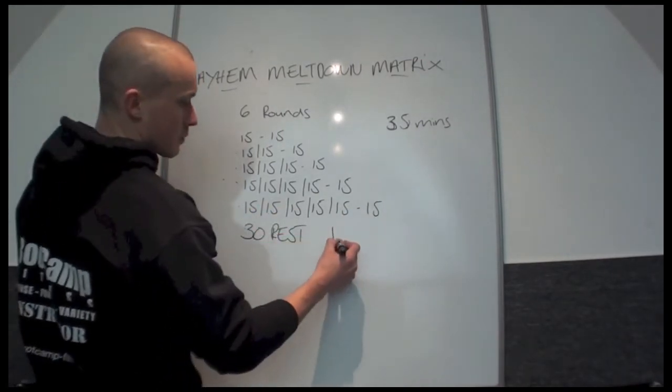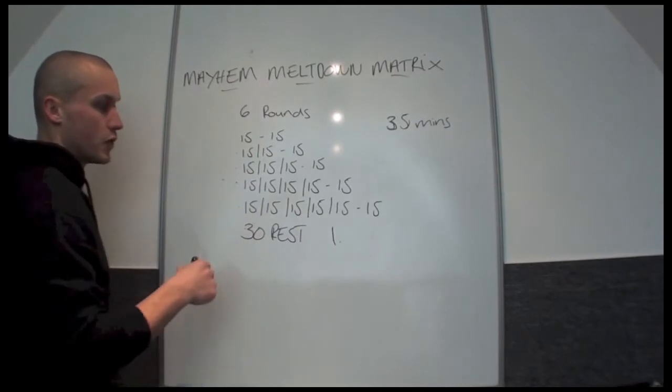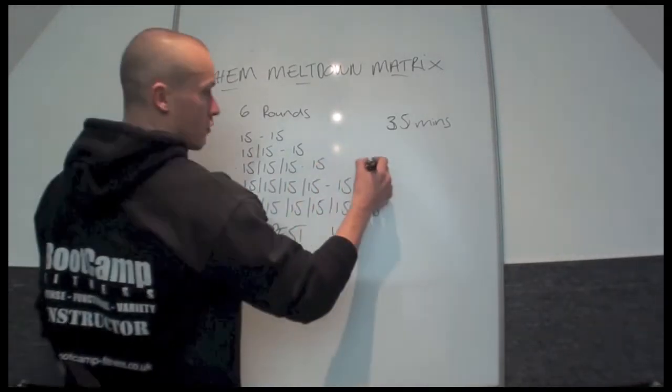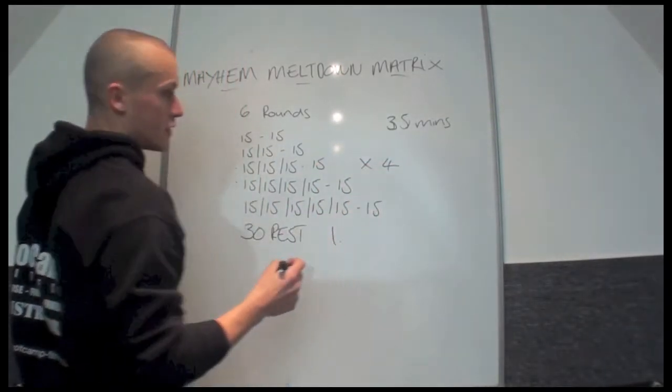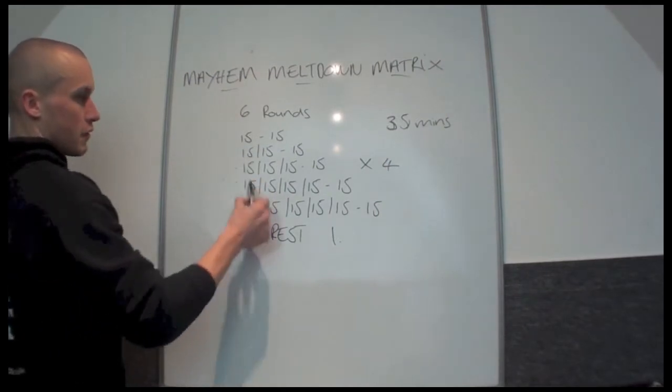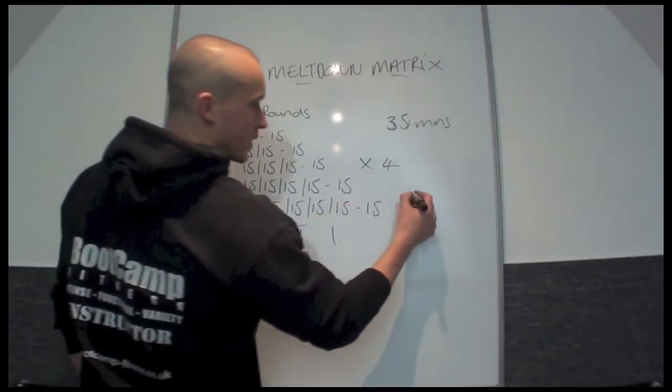That will complete round number 1. You do the same for round number 2, 3, and 4. So you repeat this 4 times. Use a different exercise for each of the rounds. That will give you a total of 20 exercises.